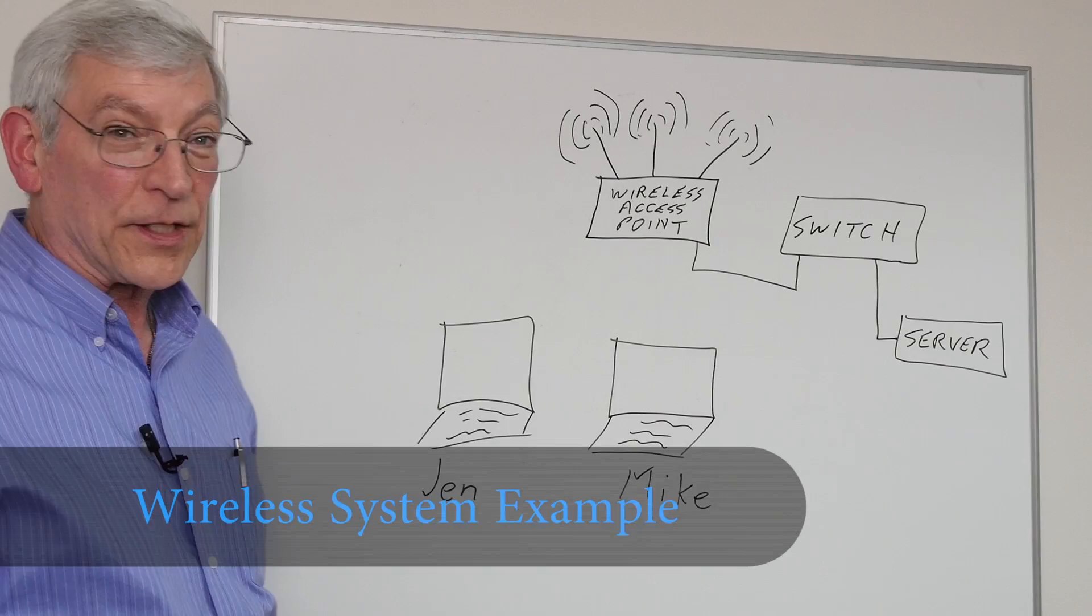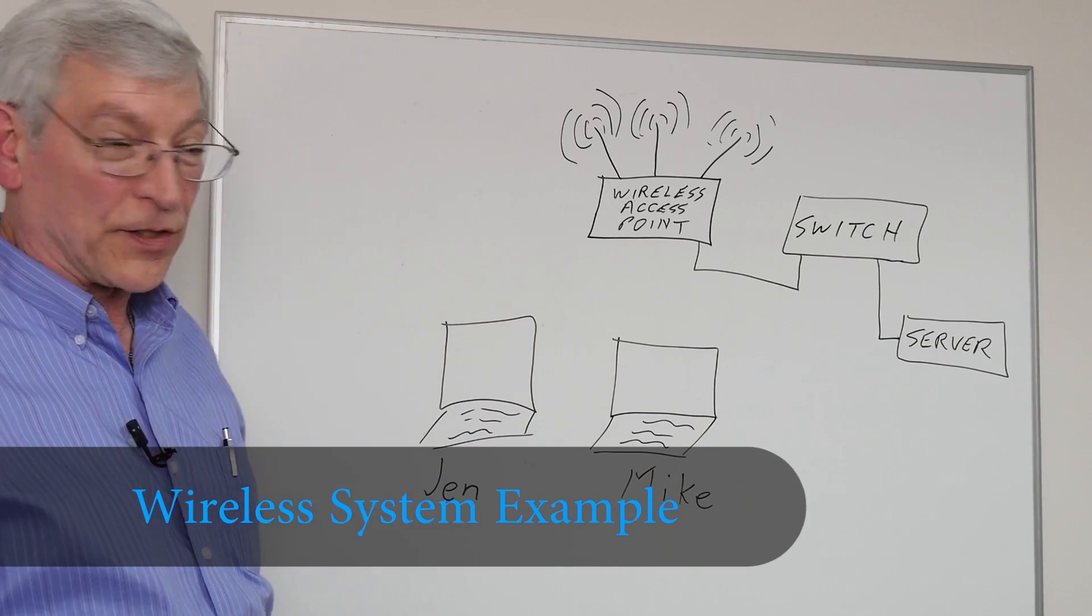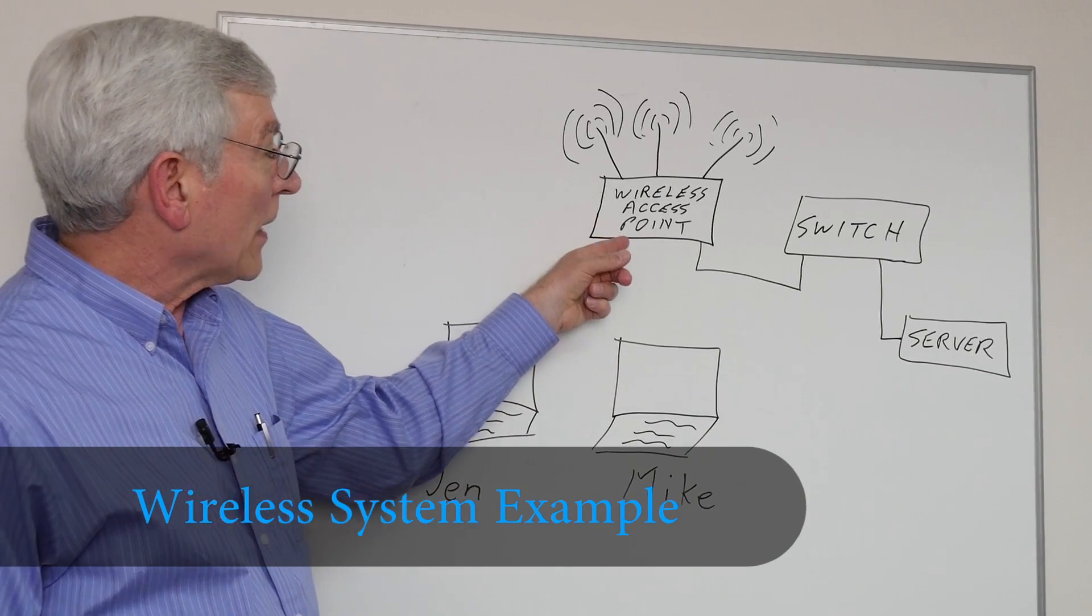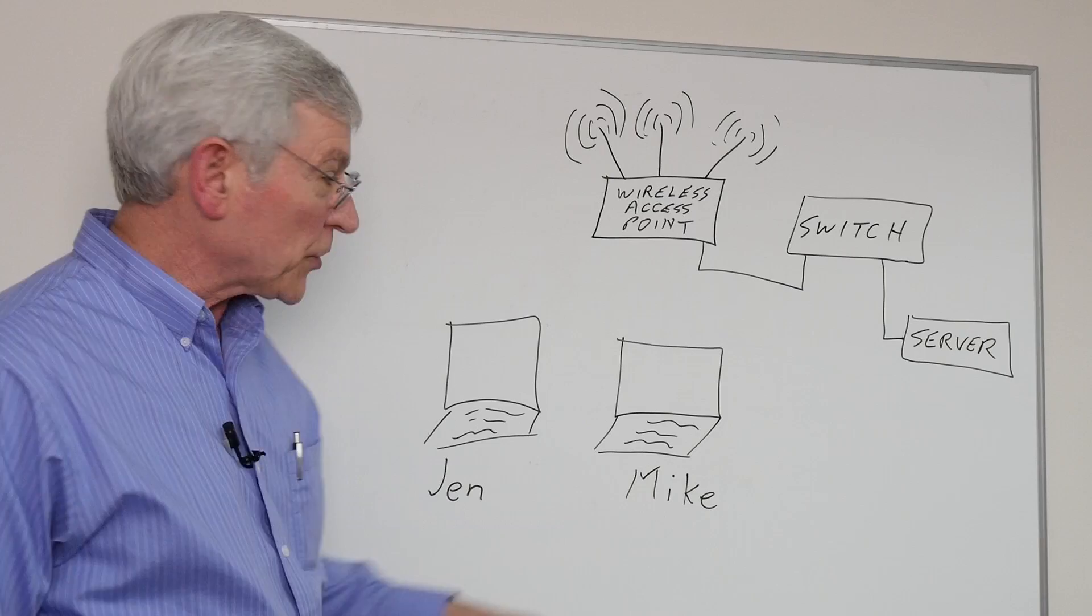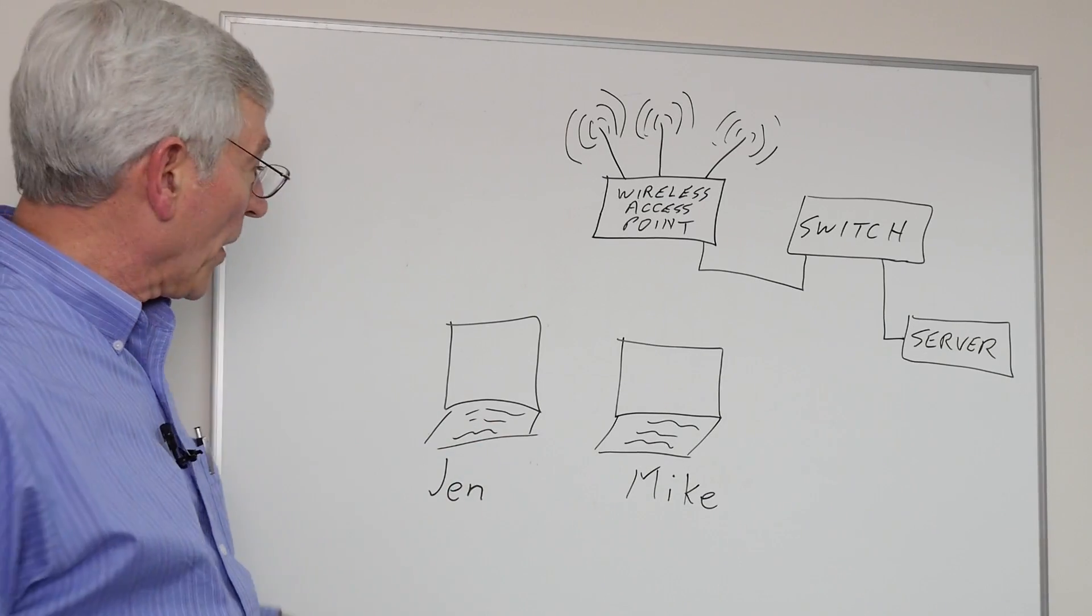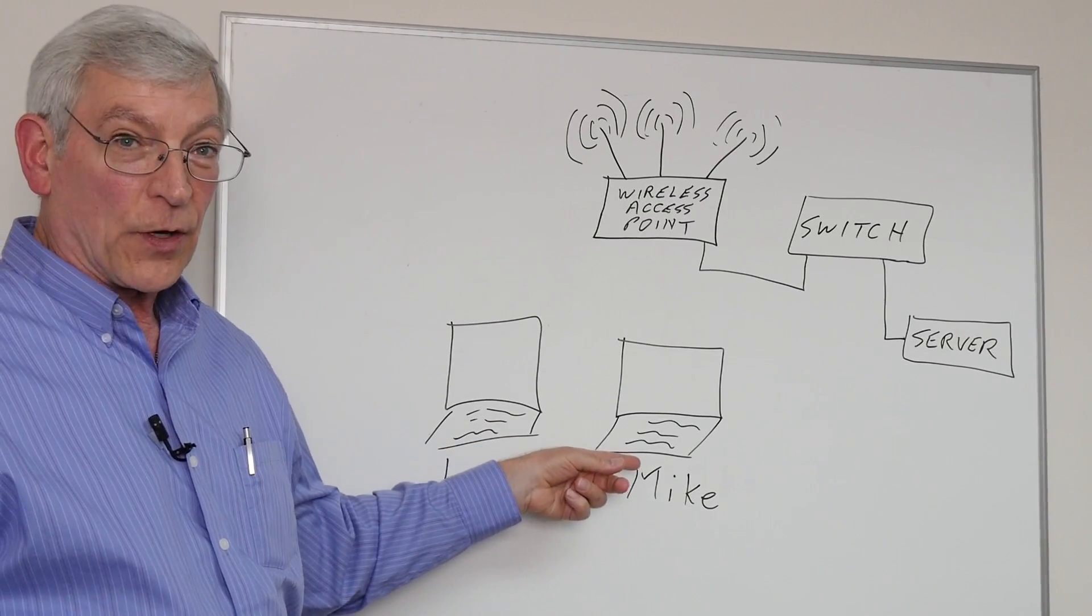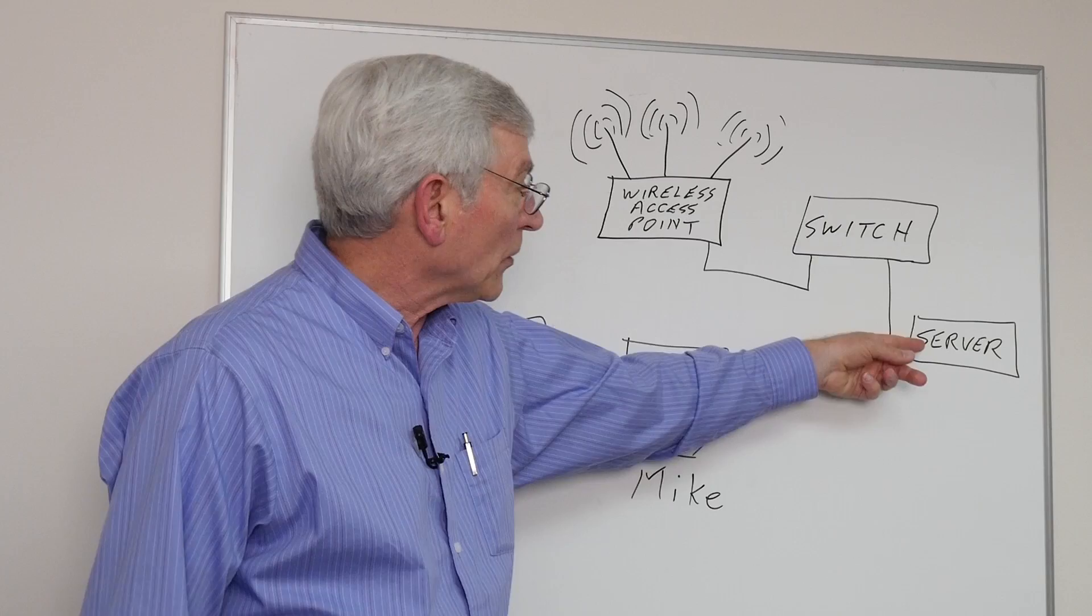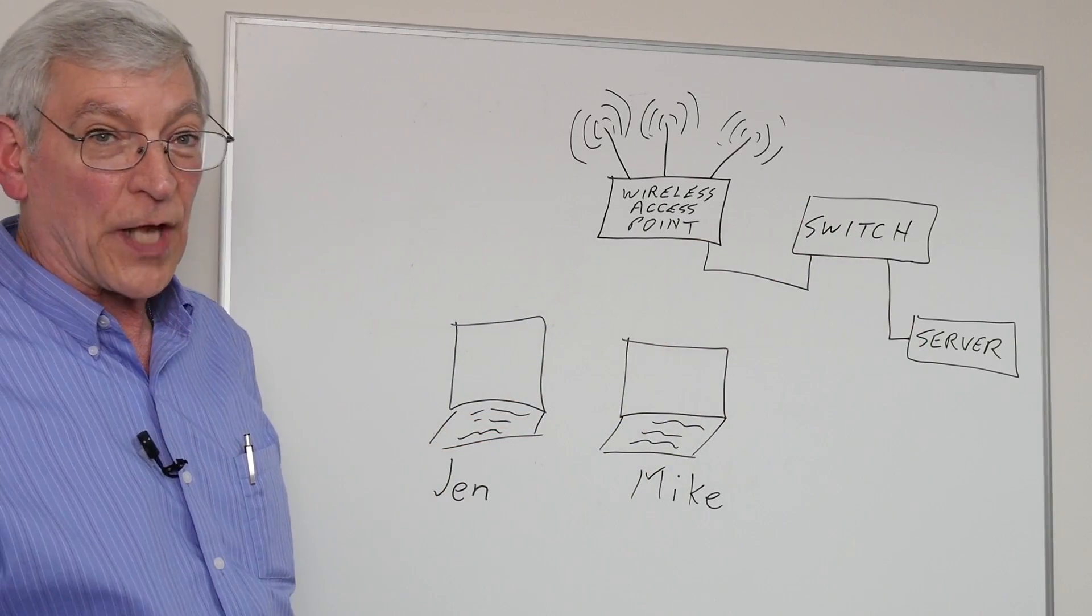I've redrawn the network so you can see the same thing with the wireless example. In this case, we've got the wireless access point connected to the switch, and so it's part of the same network. Jen and Mike have now moved to their laptops, and when they try to download files from the server, they'll have the same issue.